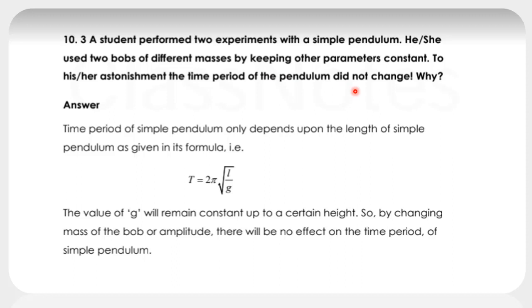There are two students who performed two experiments with different masses. The other parameters are constant. What happened? In both cases, there was no difference in time period. Why?